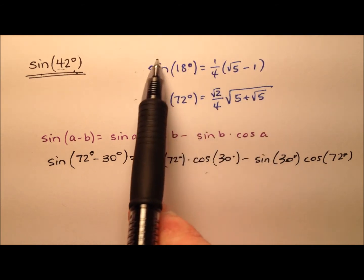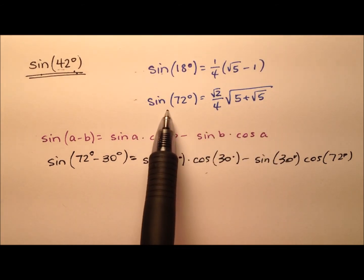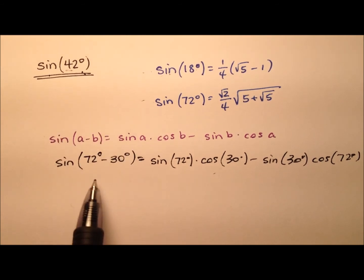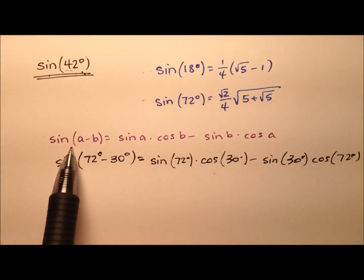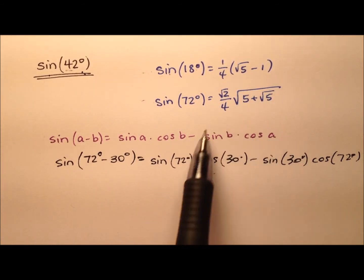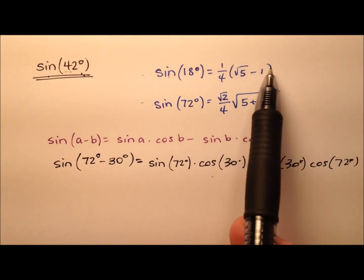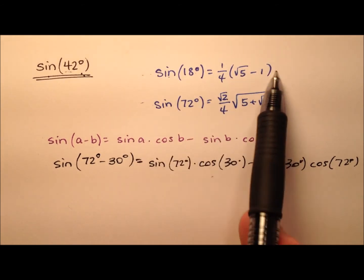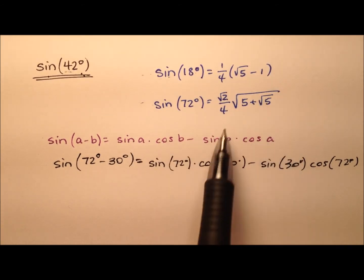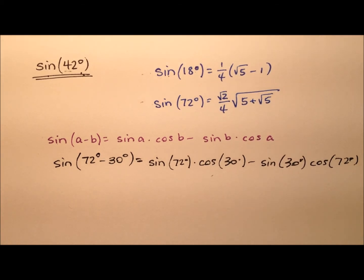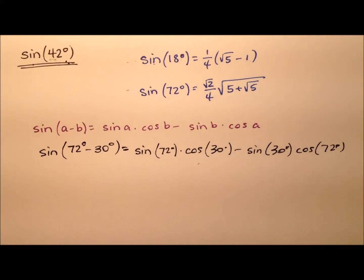And I would say these are much more interesting to probably watch than this one, because all we're doing here is just using the difference identity for sine, and we're just plugging values in that we already know. But these values, those aren't automatically known by everyone, not like the cosine of 30 or the sine of 30 that your calculator can give you pretty easily. So here we go.